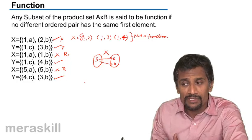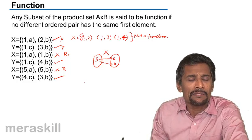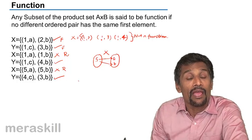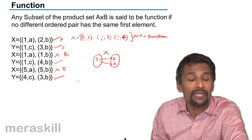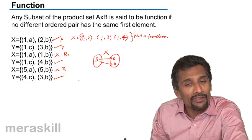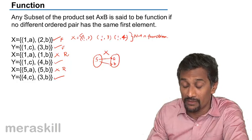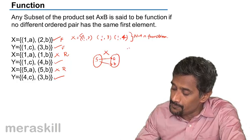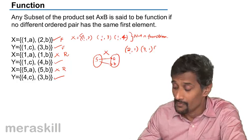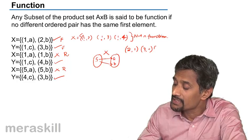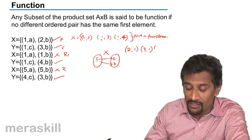To brush up: whenever you have two sets A and B, you take A cross B and get various ordered pairs. Any subset of A cross B is called a relation. Among these subsets, those where no two ordered pairs have the same first element are called functions. The second elements can be the same — for example, {(2,1), (3,1)} is a function because two different elements from A map to the same element in B. But {(1,2), (1,3)} is only a relation, not a function.